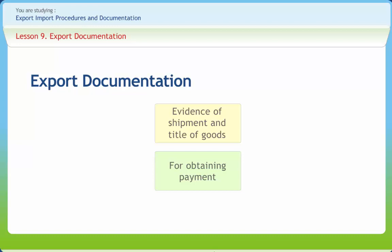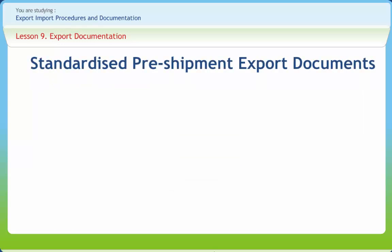Any alteration or addition made by an authority issuing the documents must be endorsed properly with the signatures of the person issuing the documents only. If the documents are not the correct ones, or if they are not filled in correctly, the importer may not be able to get the goods when the ship carrying them arrives. The Government of India has made it mandatory for every exporter to use standardized pre-shipment export documents effective from September 1, 1991.